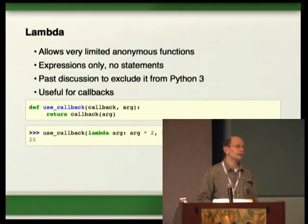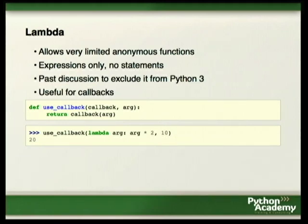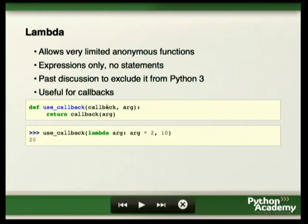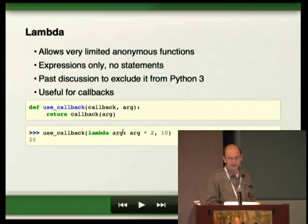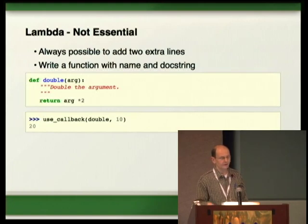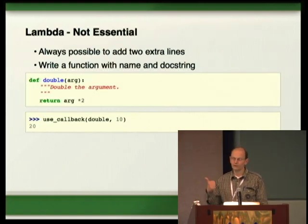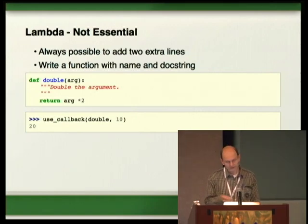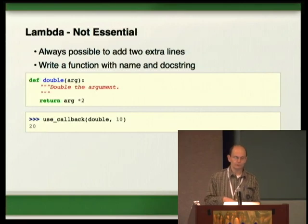Lambda is in Python and gives you very simple, anonymous functions. It's very simplified — you can only use expressions, no statements. A few years ago they talked about throwing it out of Python 3, but it made it through. It's easy to use for callbacks: lambda just says this is an argument and this is a return value, always one line. But lambdas are not really necessary — you can always write a normal function, which has the advantage of giving the function a name for documentation, and you can add a docstring.